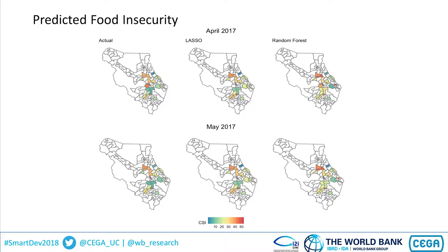To give you a sense of the data we're tracking: what we wanted to do was actually use machine learning algorithms — specifically lasso and random forests — to predict, based on the seasonal trends we had, what the future incidence of shocks would be.